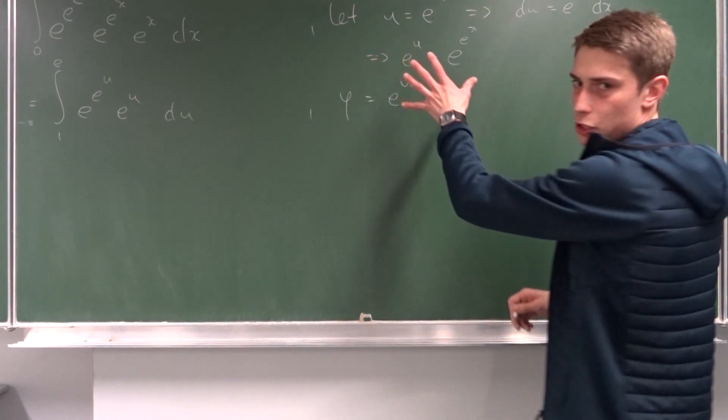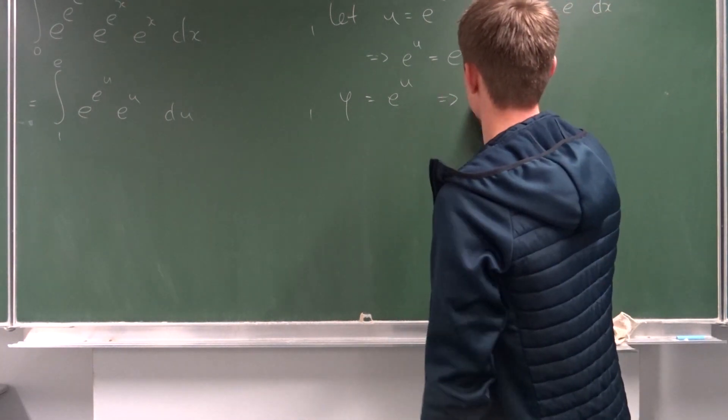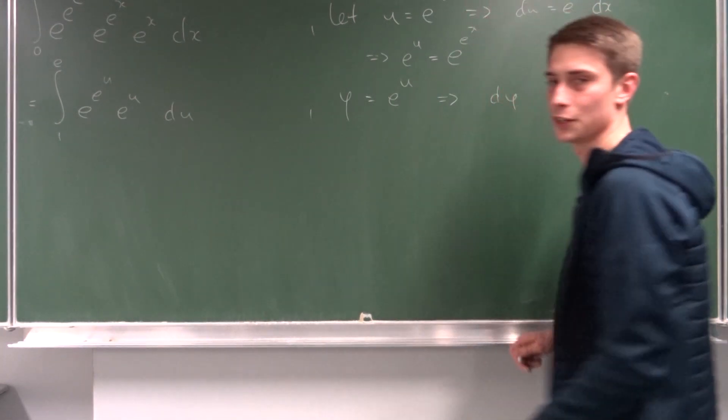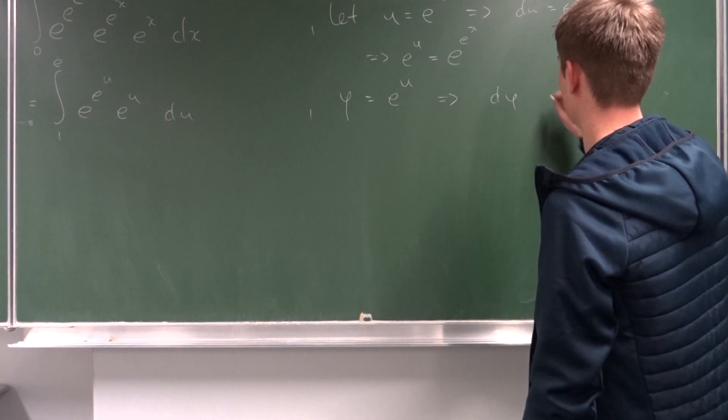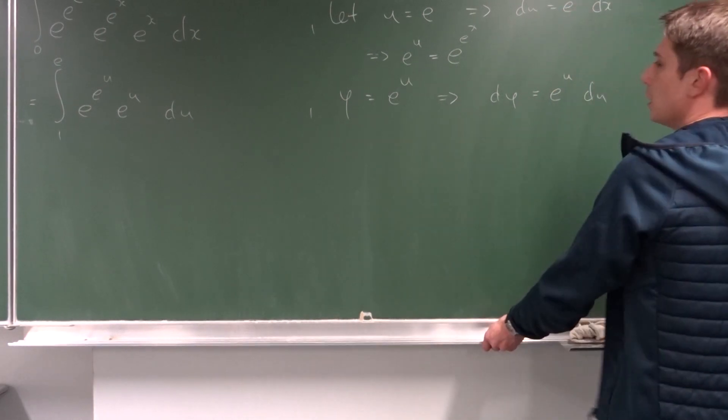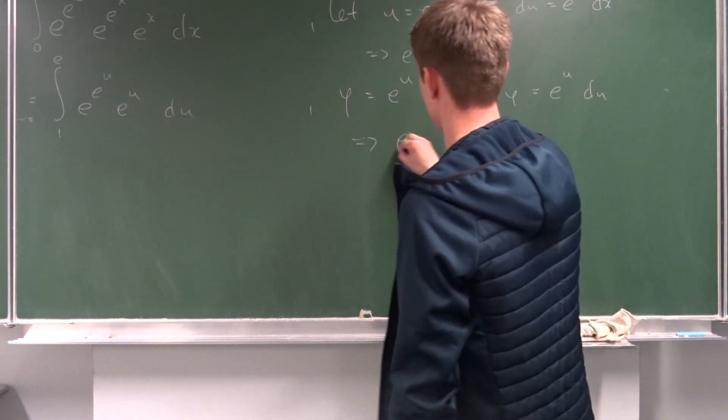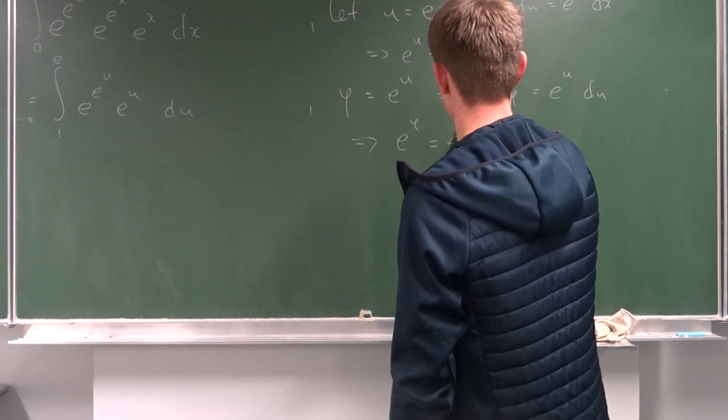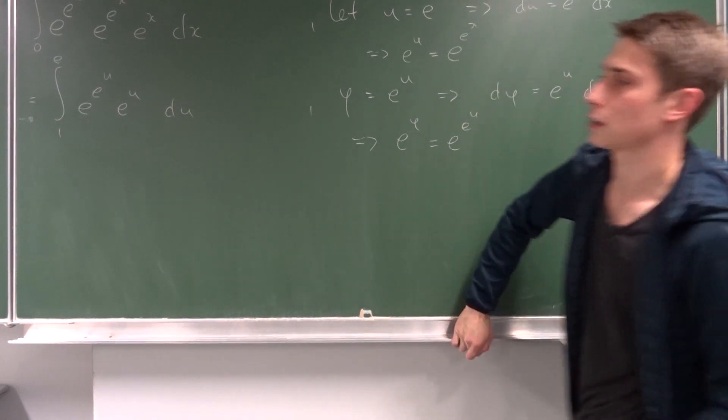And we are going to do the same procedure as before. So, that means that d phi equals e to the u du. And well, we can do the same thing as before. So, e to the phi equals e to the e to the u. And now, we can plug this in.